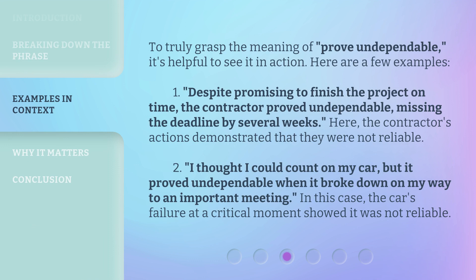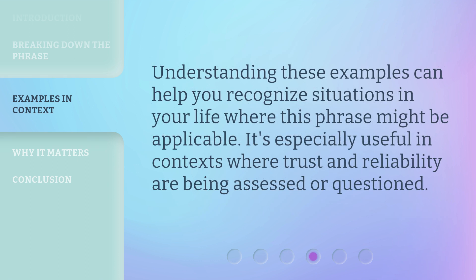To truly grasp the meaning of 'Prove Undependable,' it's helpful to see it in action. Here are a few examples. One: despite promising to finish the project on time, the contractor proved undependable, missing the deadline by several weeks. Here, the contractor's actions demonstrated that they were not reliable. Two: I thought I could count on my car, but it proved undependable when it broke down on my way to an important meeting. In this case, the car's failure at a critical moment showed it was not reliable. Understanding these examples can help you recognize situations in your life where this phrase might be applicable. It's especially useful in contexts where trust and reliability are being assessed or questioned.